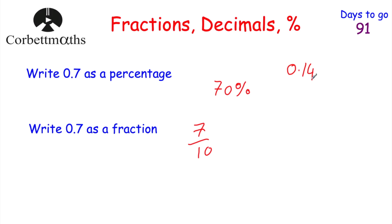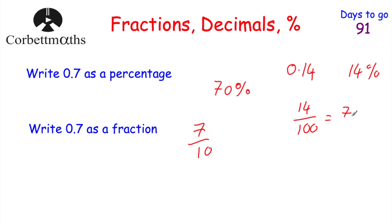If we had something different, such as 0.14 — to change this into a percentage, you'd multiply by 100, so it would be 14%. And to write 0.14 as a fraction, we see that the one is in the tenths column and the four is in the hundredths column, so we've got 14 hundredths. This can be cancelled down because they're both divisible by 2, so dividing both by 2 gives us 7 over 50. So 0.14 is 7 fiftieths.